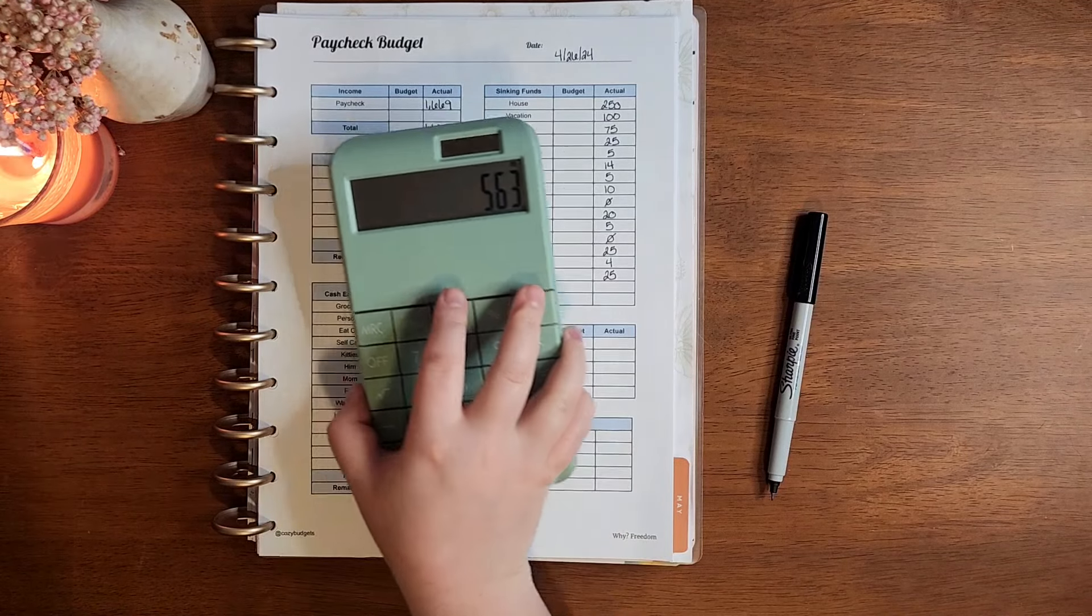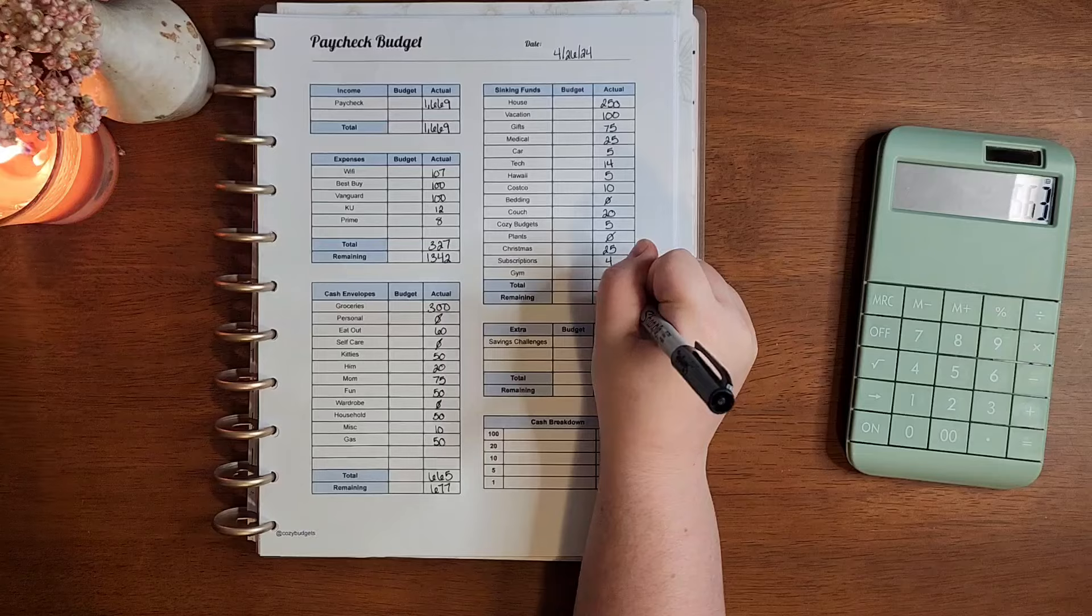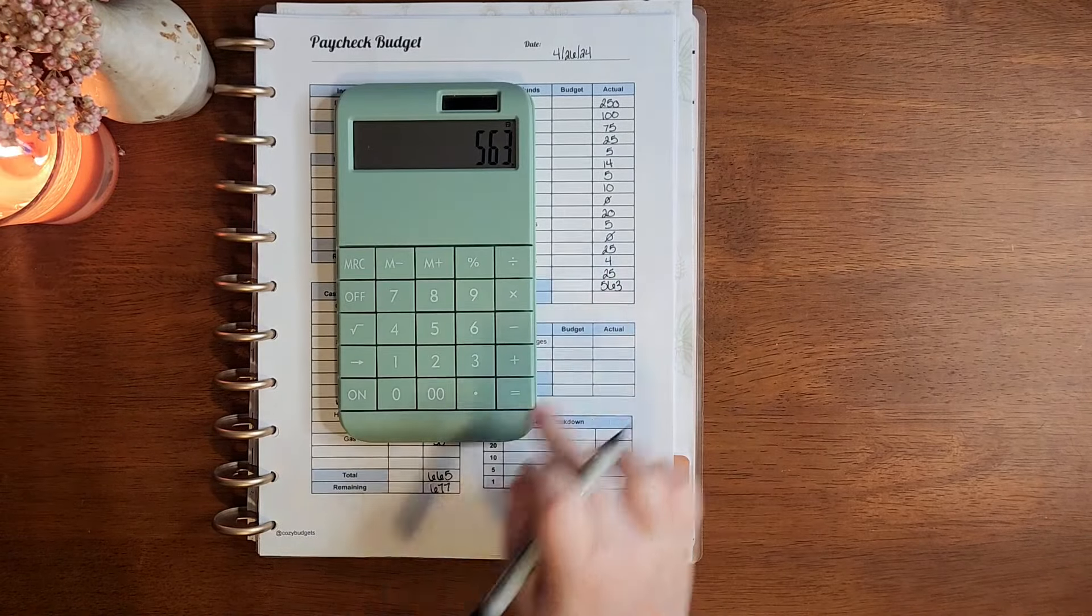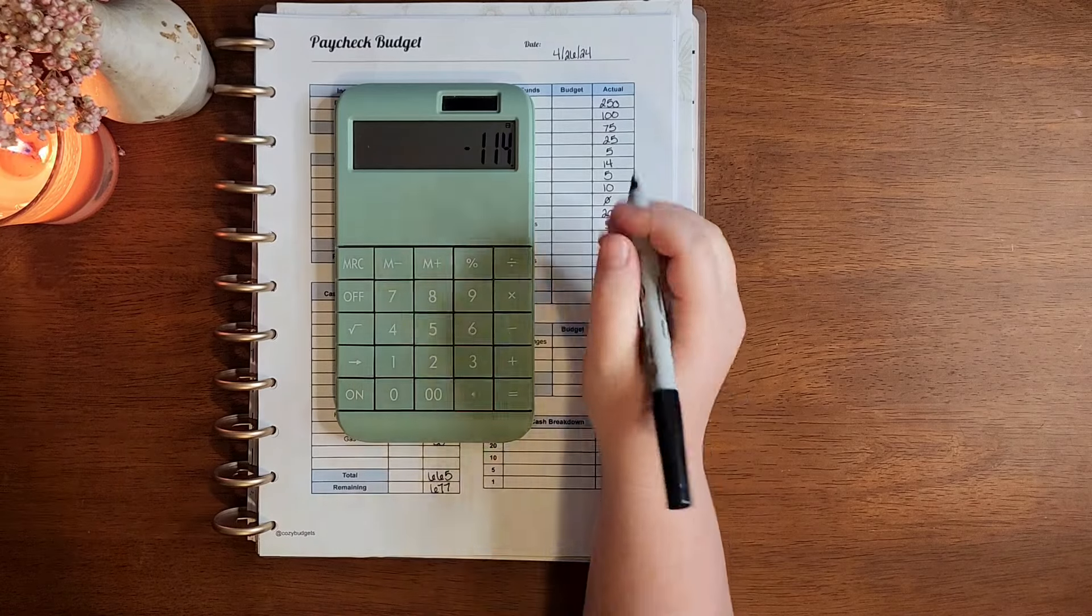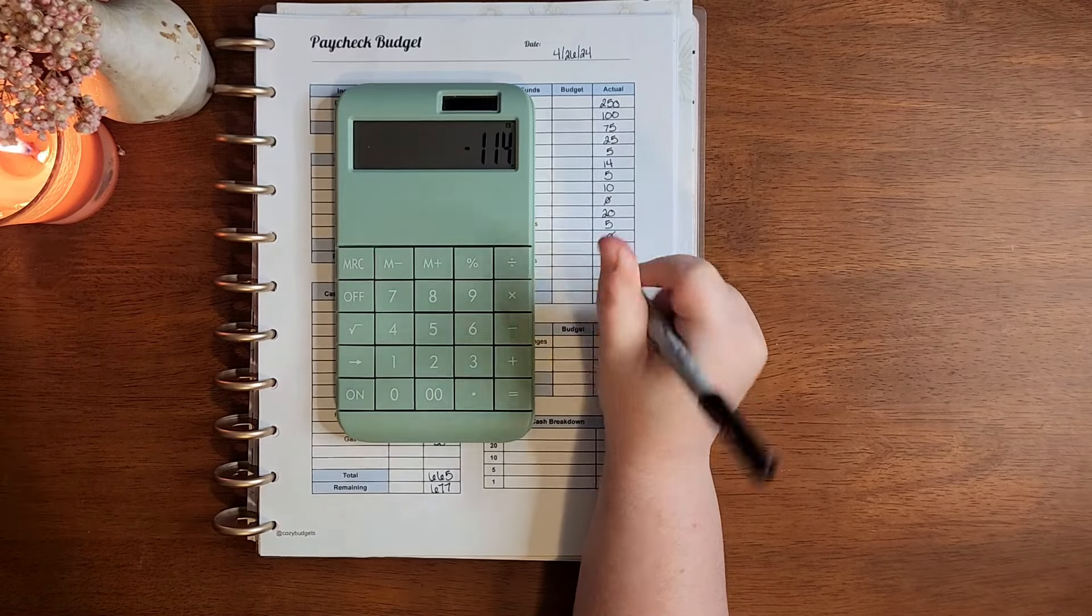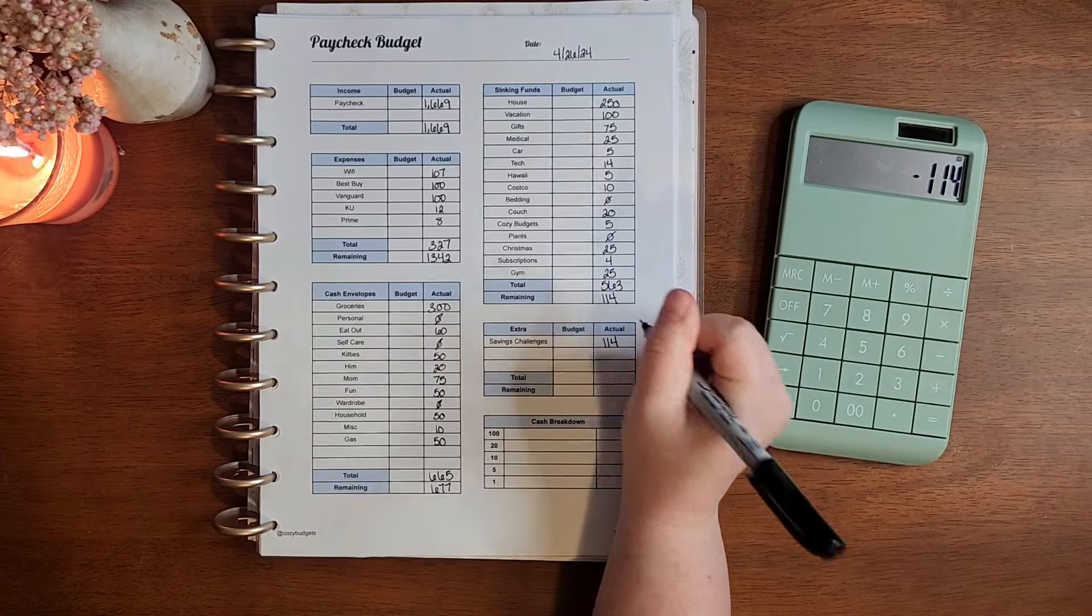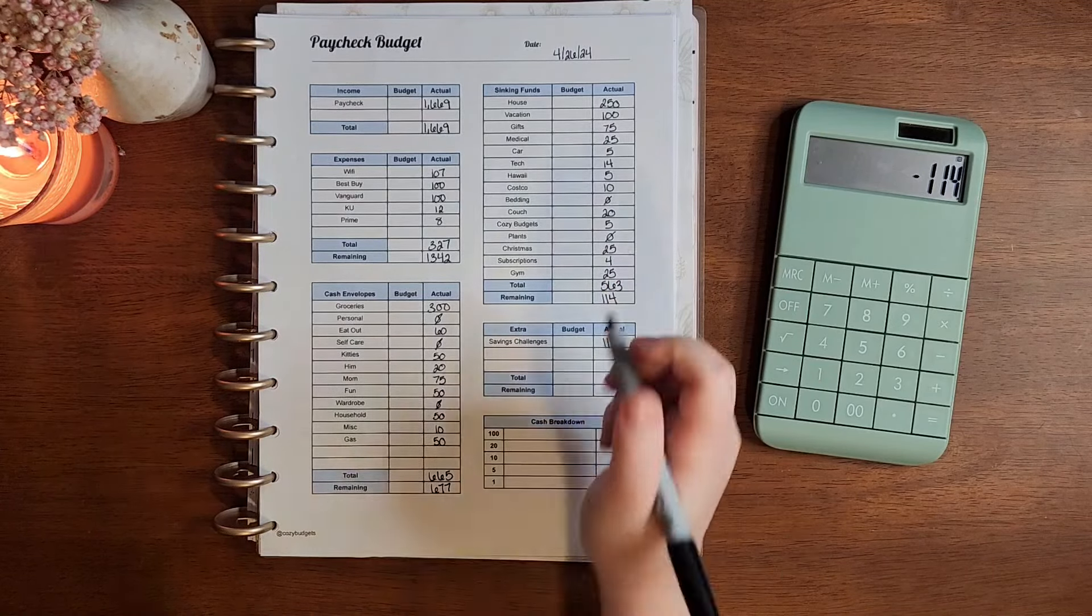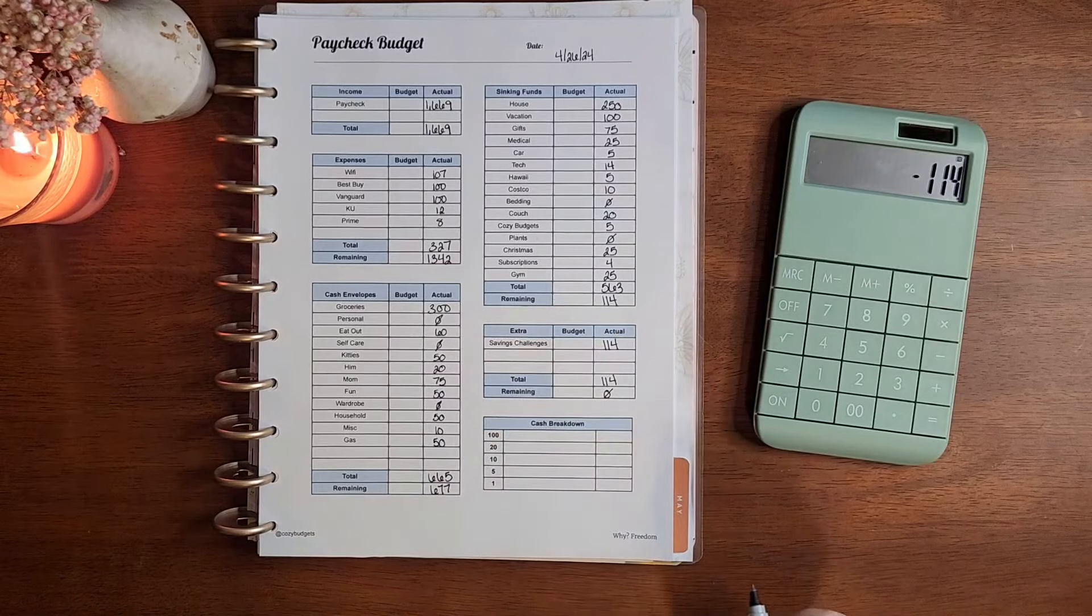Alright, so that comes to $563. And if we take $563 from $677, that leaves us $114. And we are going to move that $114 down to savings challenges. And that gives us a zero-based budget.